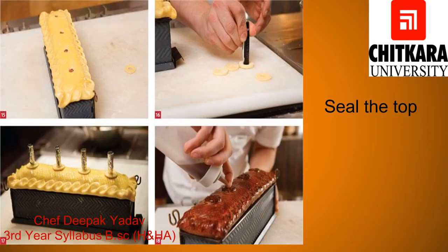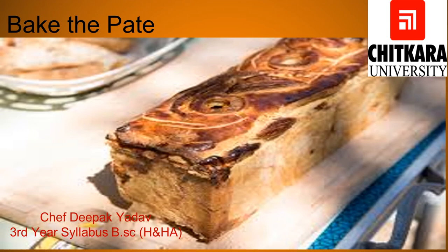After putting in the force meat, we have to seal our Pate mold. As you can see in this picture, this is the way we do it. In the next step, the Pate has to be baked. The Pate should be baked at around 175 degrees Celsius until it is golden brown in color. The internal temperature should be around 75 degrees Celsius. If you have a thermometer, you can check — the internal temperature should be around 75 degrees Celsius. As you can see in this picture, our Pate is baked very nicely and is golden brown, so we can see that our Pate is ready.